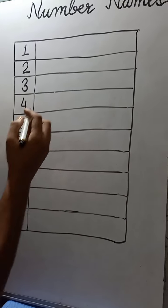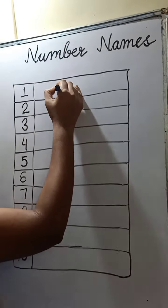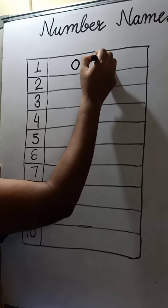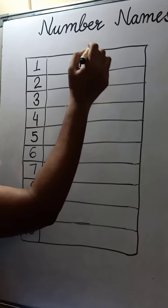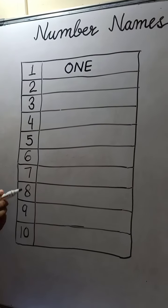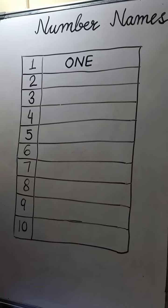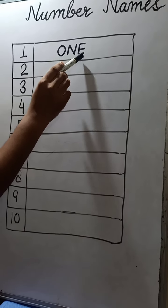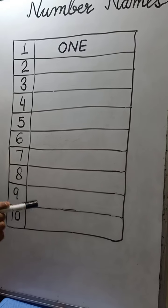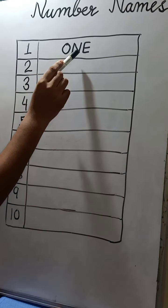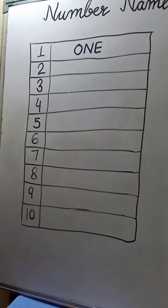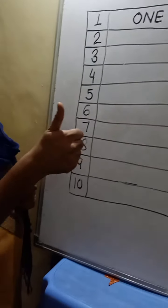O-N-E. This is the number name of digit 1. Now you speak with me. O-N-E. Again repeat with me. O-N-E. I hope you learn about it. Very good. Show me thumbs up.